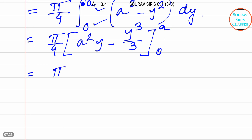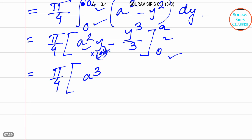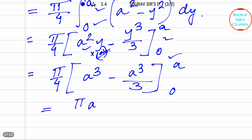From this we get π/4 times [a²y − y³/3] evaluated with limits a and 0. Putting y = a gives a³ − a³/3, and y = 0 gives 0. So the final answer is πa³/6.